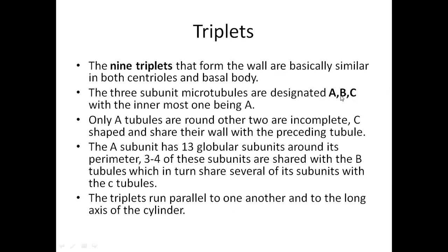The triplets are named A, B, and C microtubules. Among these three, A is completely circular having around 13 subunits, while B and C are not complete — they have a C-shaped structure. These triplets run parallel to one another and form the long axis of the cylinder.